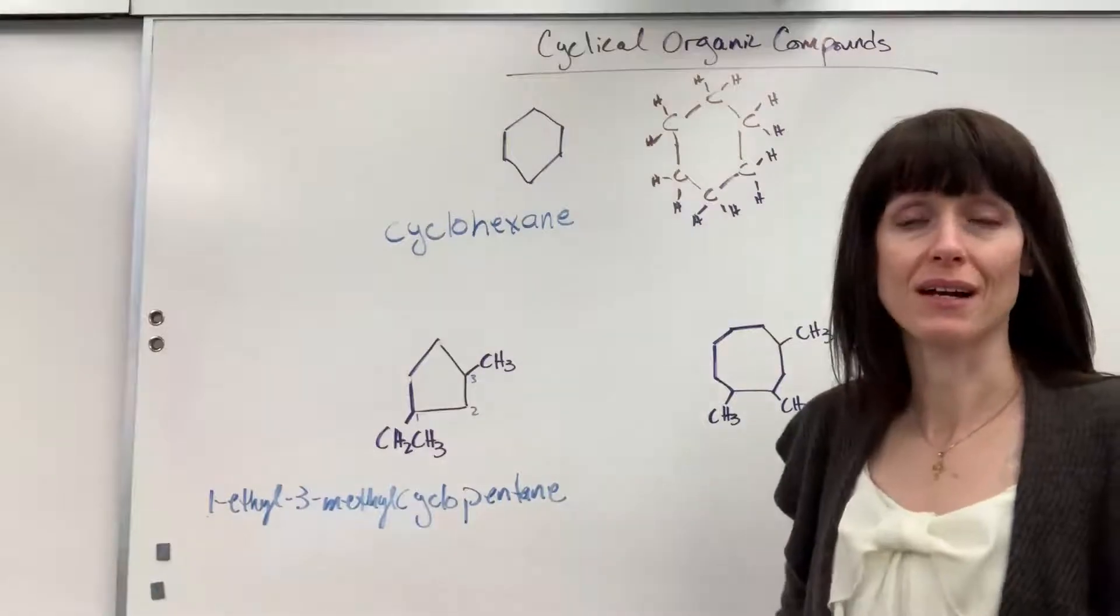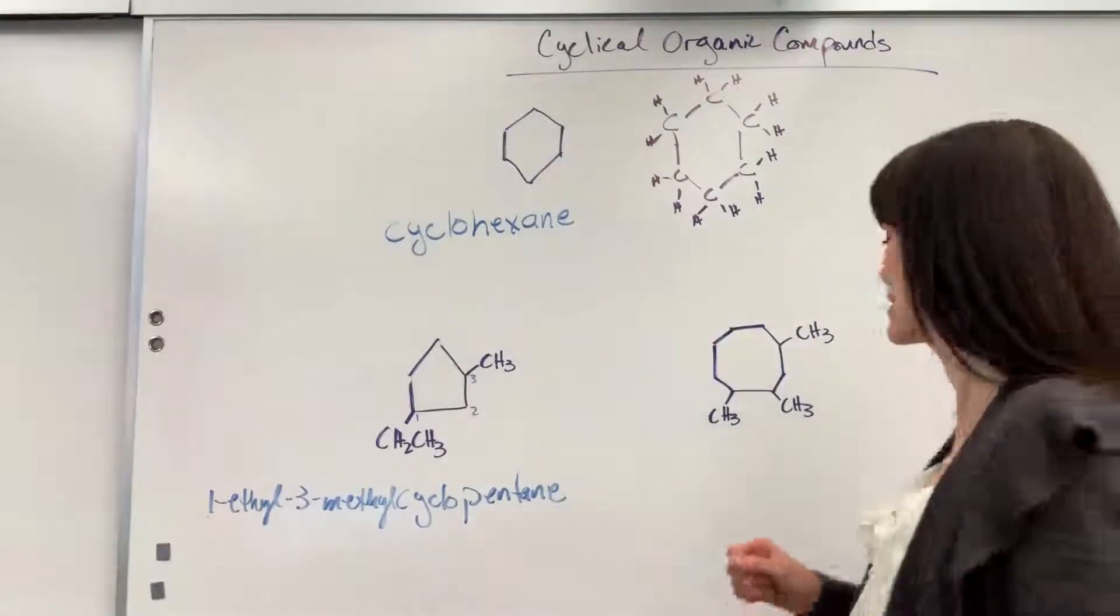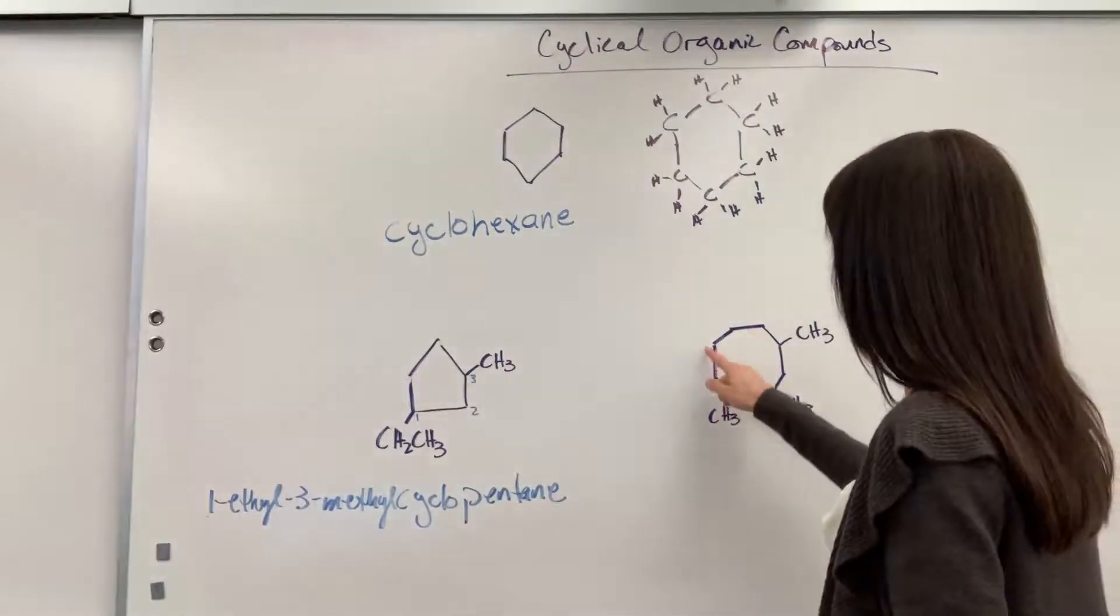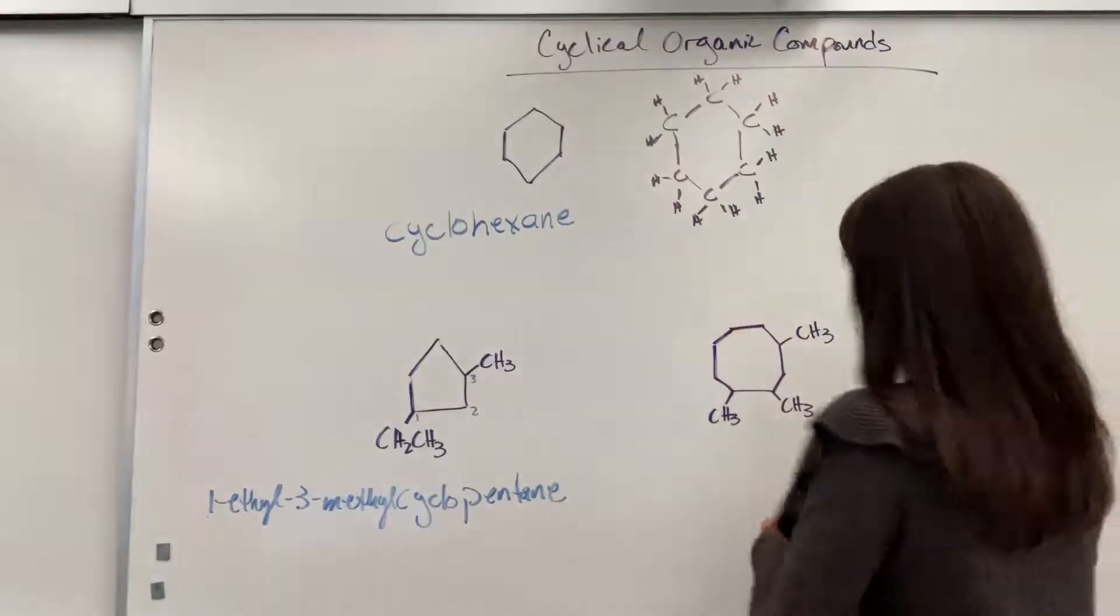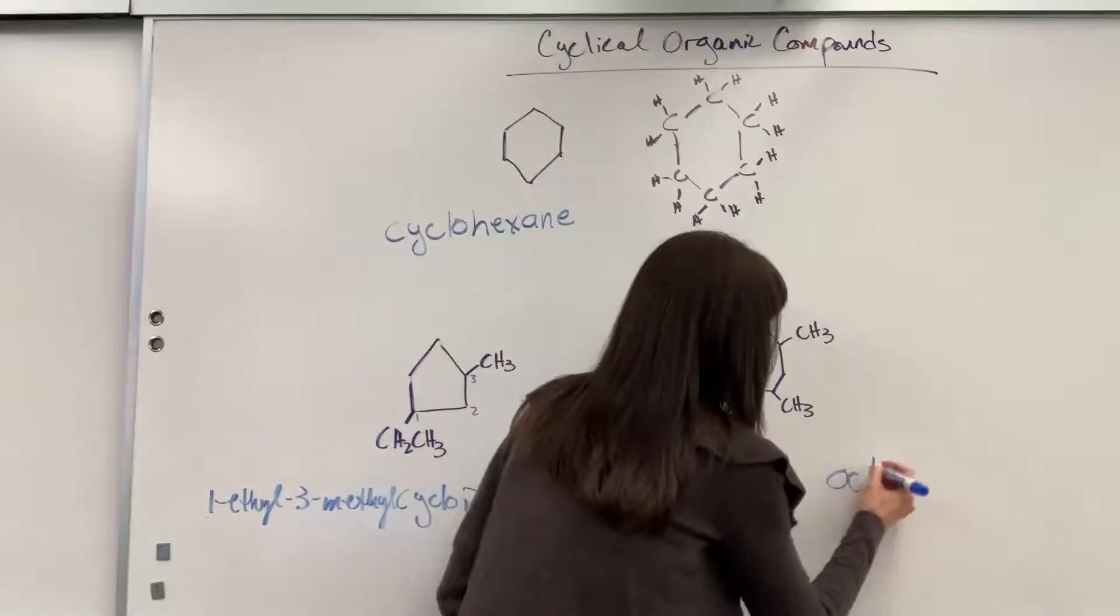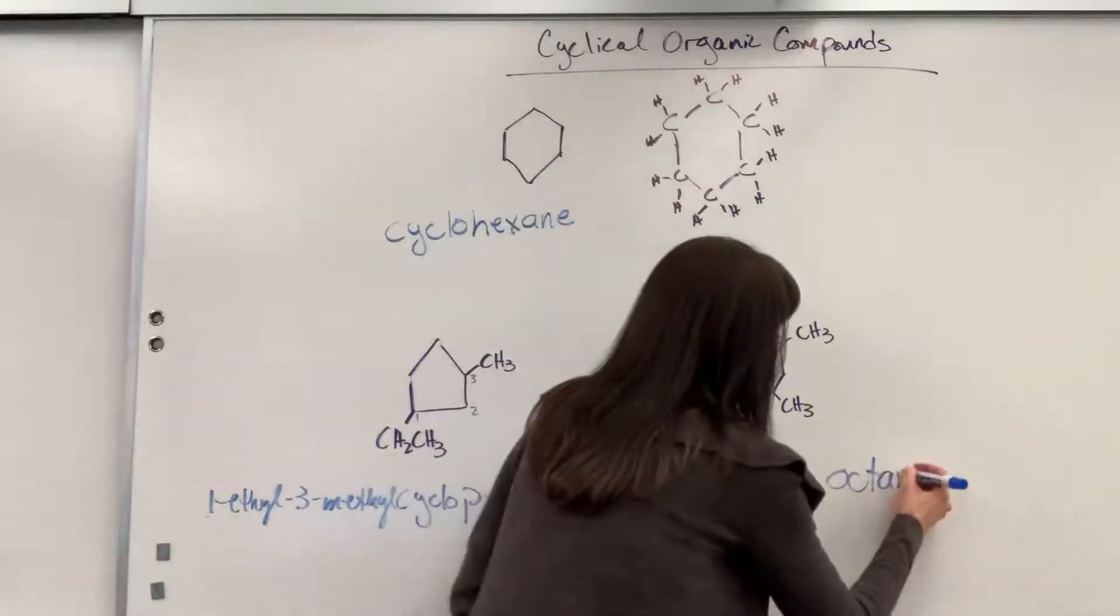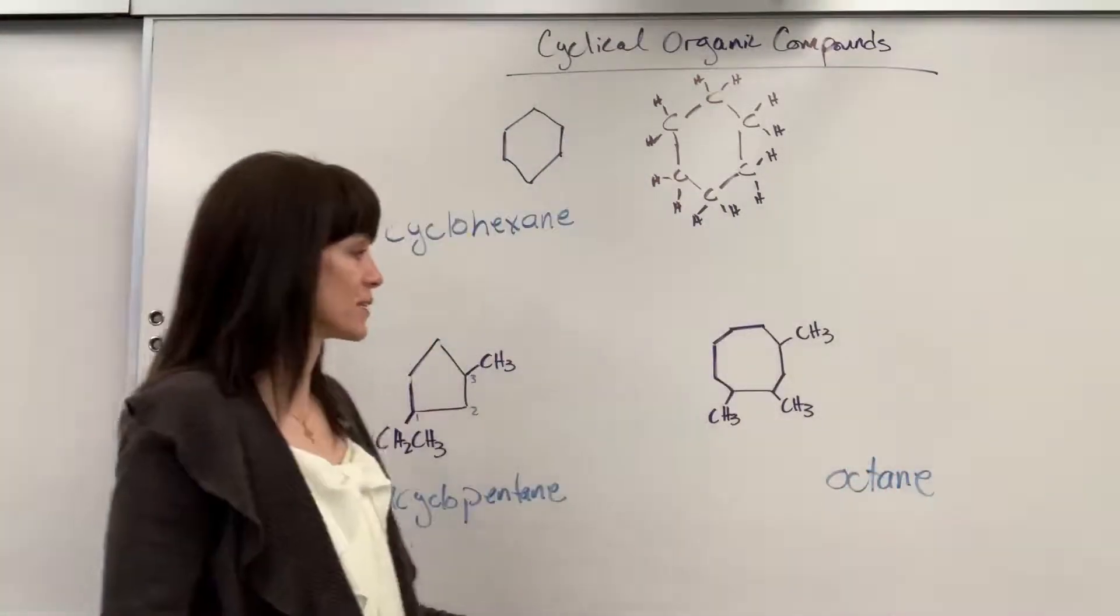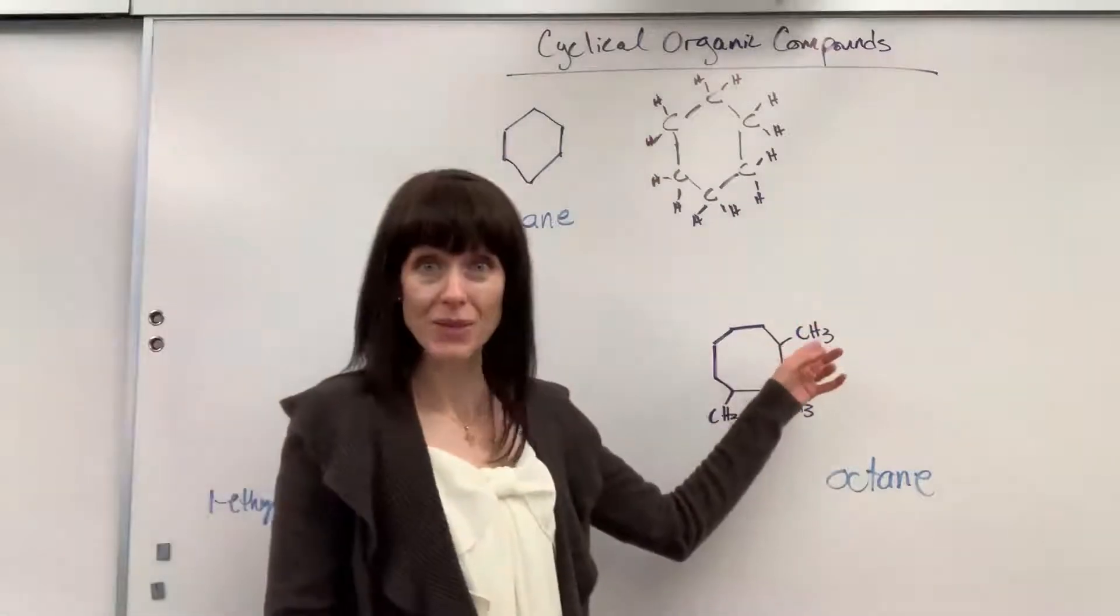So let's count that cyclical compound, how many carbons there are. We've got one, two, three, four, five, six, seven, eight. So eight carbons is going to be oct. They're all single bonded, is ane. And now we have to tell the reader where we have these three methyl groups.